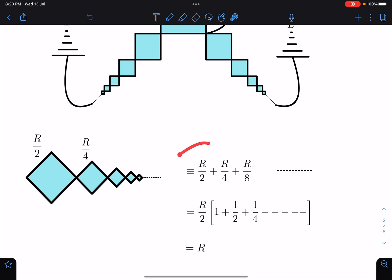I hope you are able to understand. All of them are in series, so we can write this equivalent resistance as R by 2, R by 4, R by 8 in series. When we simplify this we are going to get this as R.